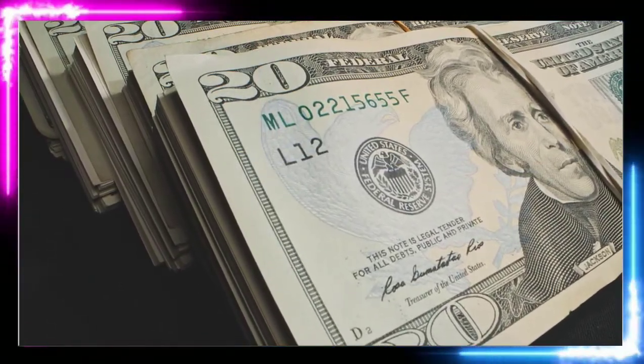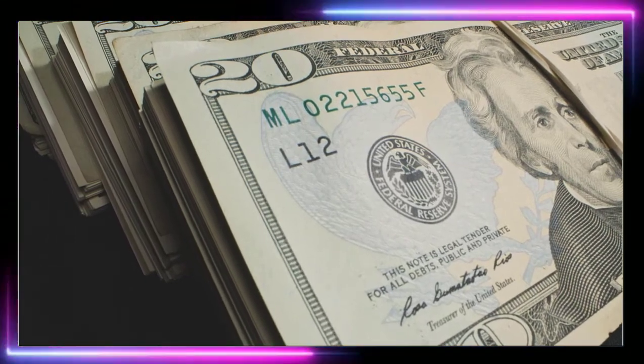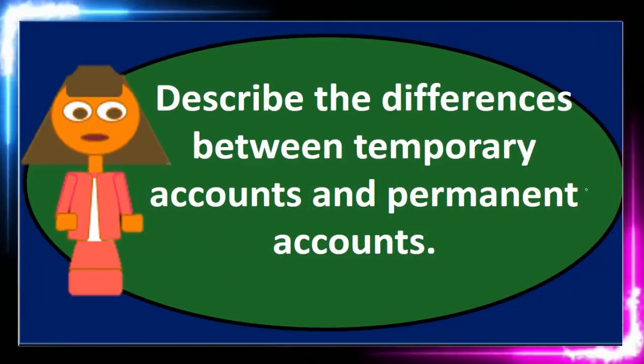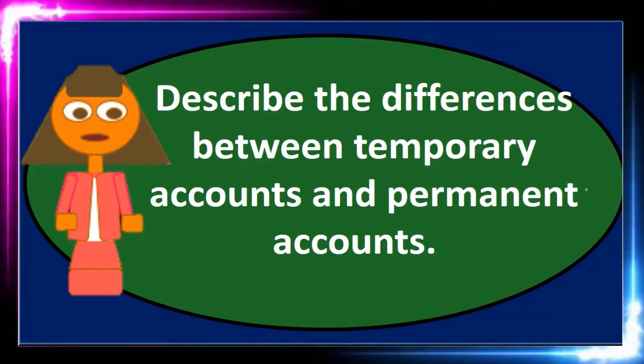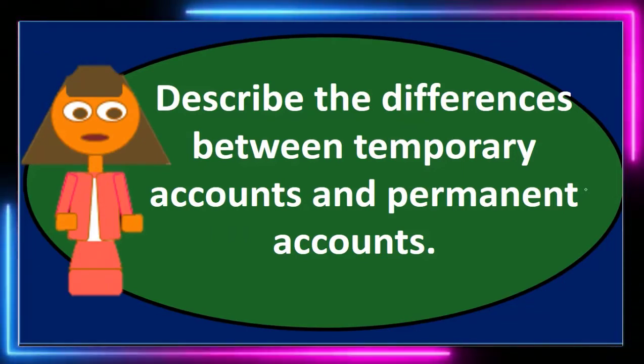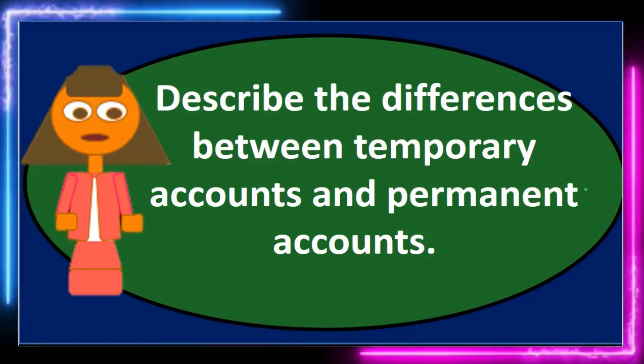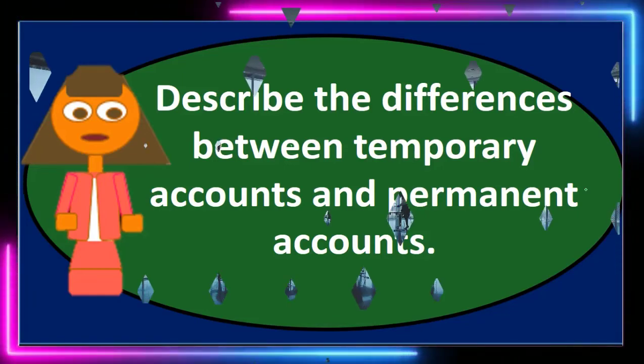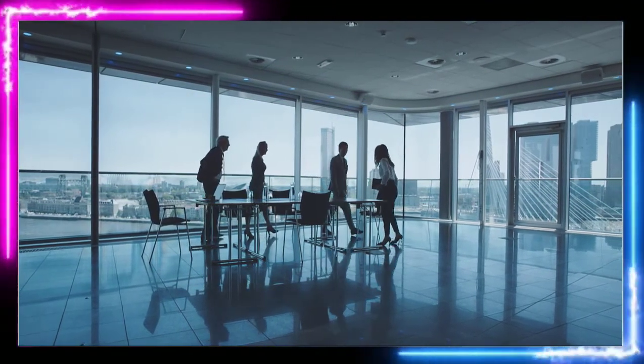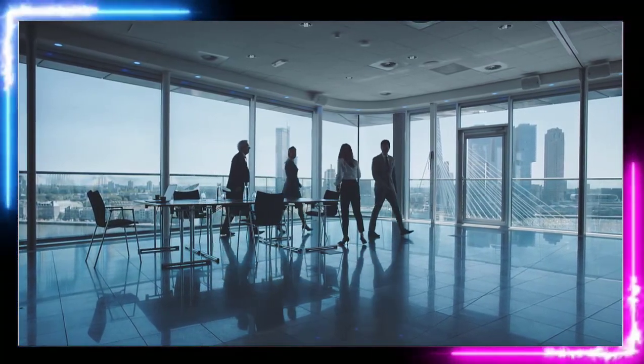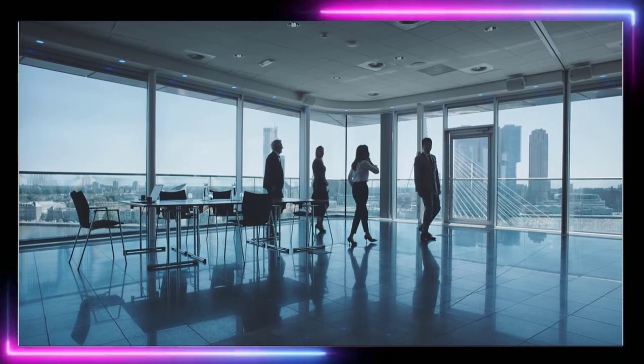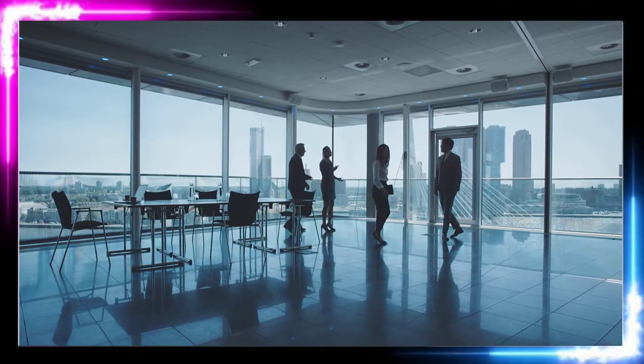Permanent accounts will not be closed out at the end of the time period. They will remain. The only permanent account usually involved in the closing process is the capital account or retained earnings account if we were a corporation, because it'll still remain—it doesn't go away, it's not a temporary account, it doesn't go to zero—but that is the account we will be closing the temporary accounts into.